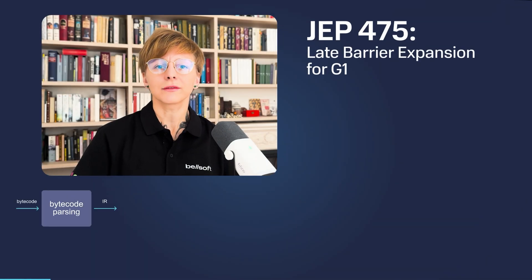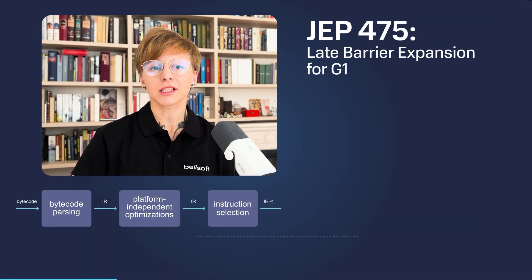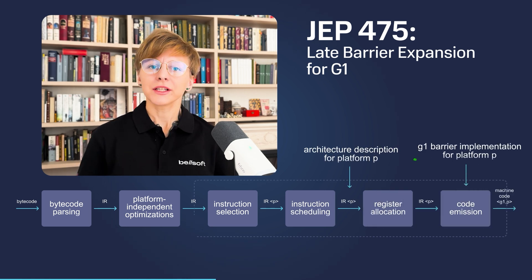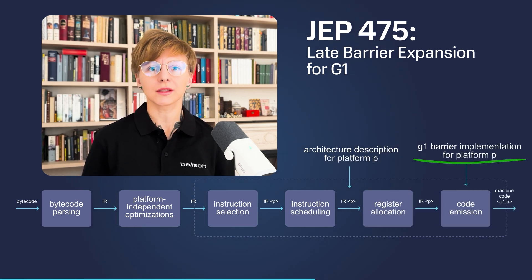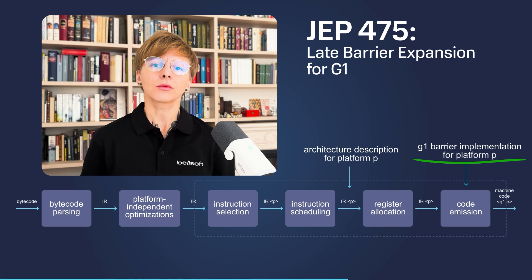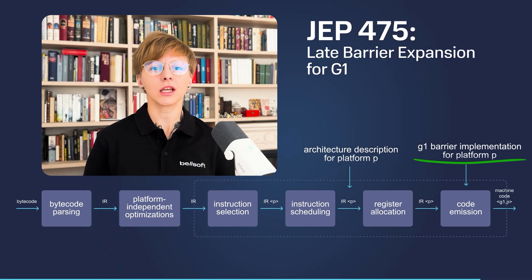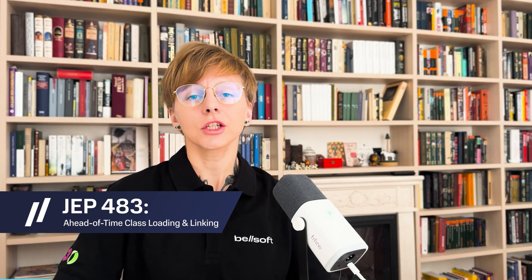JEP 475 introduces delayed barrier expansion for the G1 garbage collector. This feature will help to improve the performance of Java applications in the cloud, as it will help to reduce the CPU time and memory overhead during the JVM warm-up.